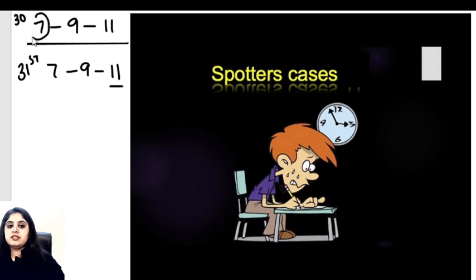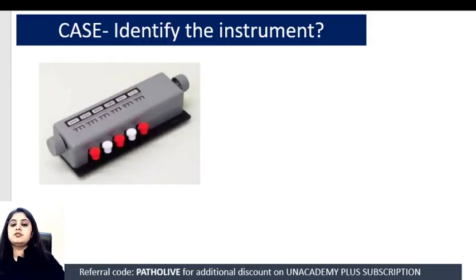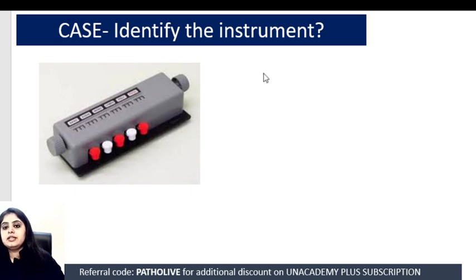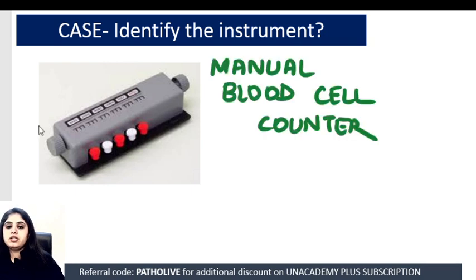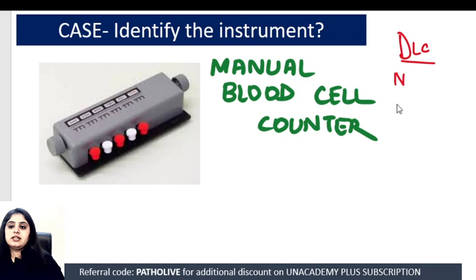Let's begin with the Spotter Fest of the day — the first one for today. This happens to be an instrument which I think everyone identifies very quickly, and it is a must-have in a hematology lab. This is a manual blood cell counter; it looks more like piano keys. Whenever we have to do the differential leukocyte count — analyzing how many neutrophils, lymphocytes, monocytes, eosinophils, and basophils — we use this kind of counter.